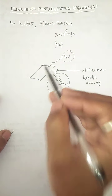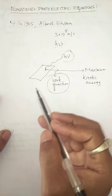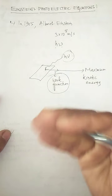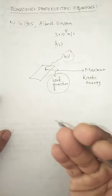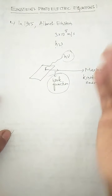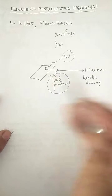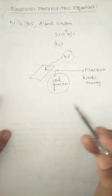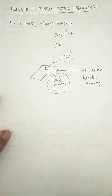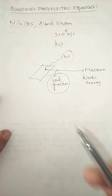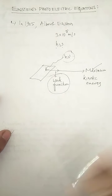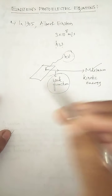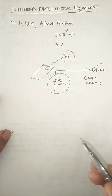In Einstein's equation, electrons are not only ejected from the surface but also from the interior of the metal. If any electron is ejected from the interior, it undergoes a number of collisions, and some energy is lost coming out from the interior to the surface. That is why the electron ejected from the surface of the metal has the maximum kinetic energy, since no energy is lost by collision.